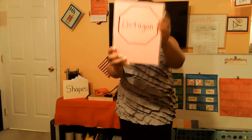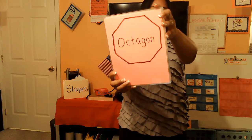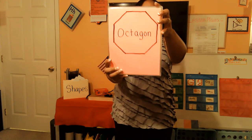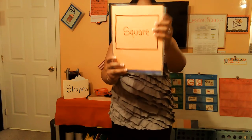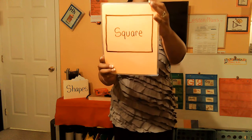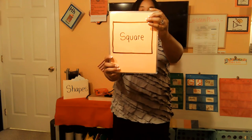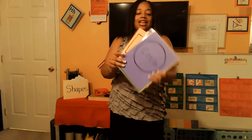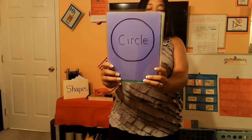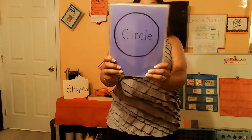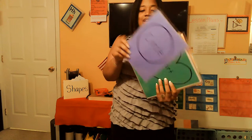This is an octagon, octagon, octagon. This is an octagon today. This is a square, square, square. This is a square today. This is a circle, circle, circle. This is a circle today.